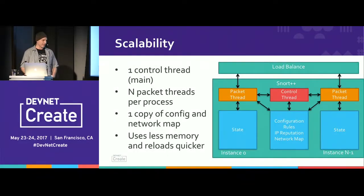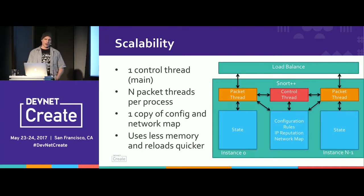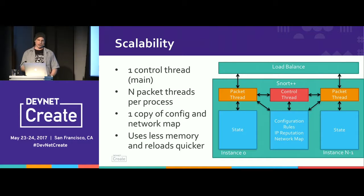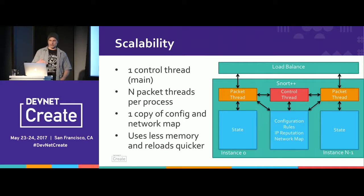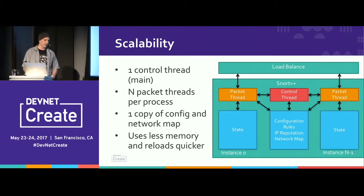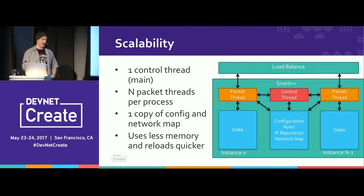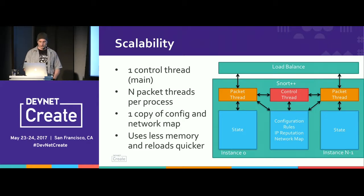Starting with scalability: with Snort 2.x there is one packet thread and multiple control threads. With Snort++, we've turned that around — we have multiple packet threads and one control thread. The significance is that all packet threads share the configuration, share the fast pattern search engines, and share the network map where we compile everything we're learning about the network. This scales better because it takes less memory and leaves more memory for state. On a 24-core system, vanilla Snort needs 24 separate processes with 24 configs, but Snort++ just reloads one config.